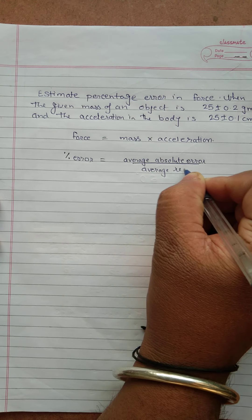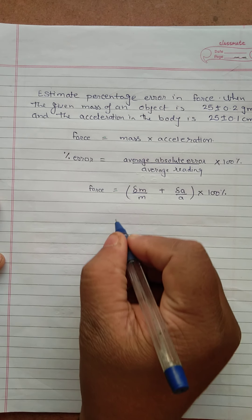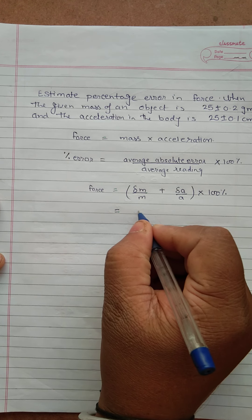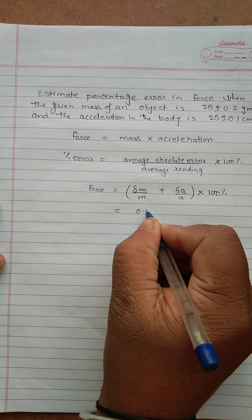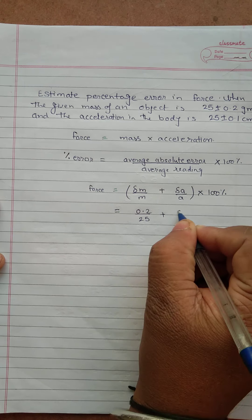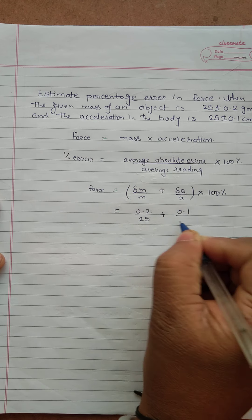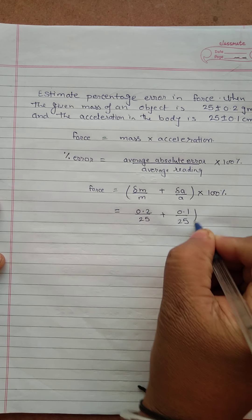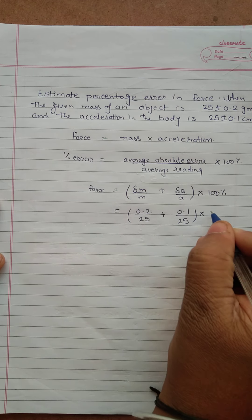Into hundred percent. Okay, so which is equal to 0.2 upon 25 plus 0.1 upon 25. We have just substituted the values.